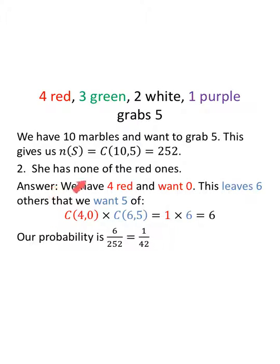What if she has none of the red ones? Well, we have four red, and we want zero. This leaves six other marbles that we have, and we want five of them. We want all five to be not red. So the combinations of four things taken zero at a time is one. The combinations of six things taken five at a time is six. One times six is six. Remember, go back to the factorial definition to find out those combinations. Make sure I'm right.